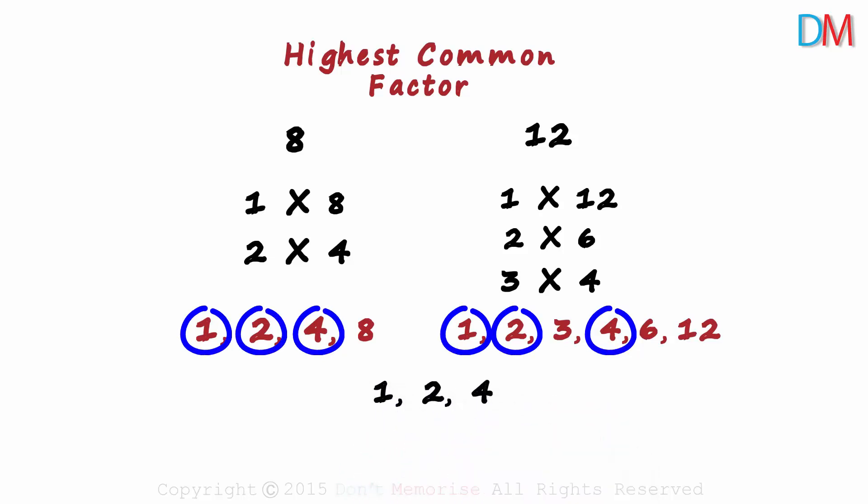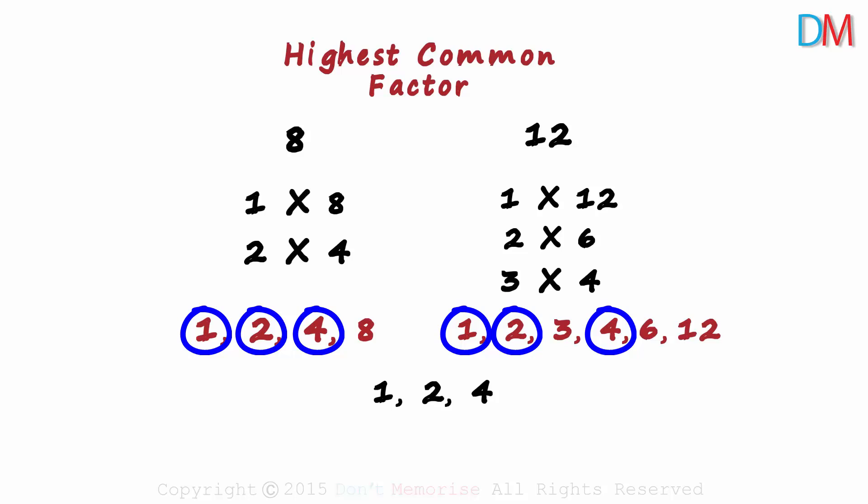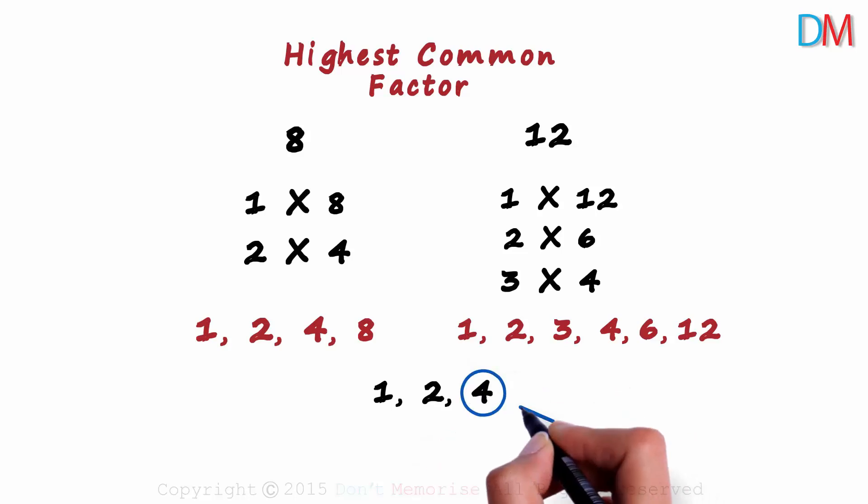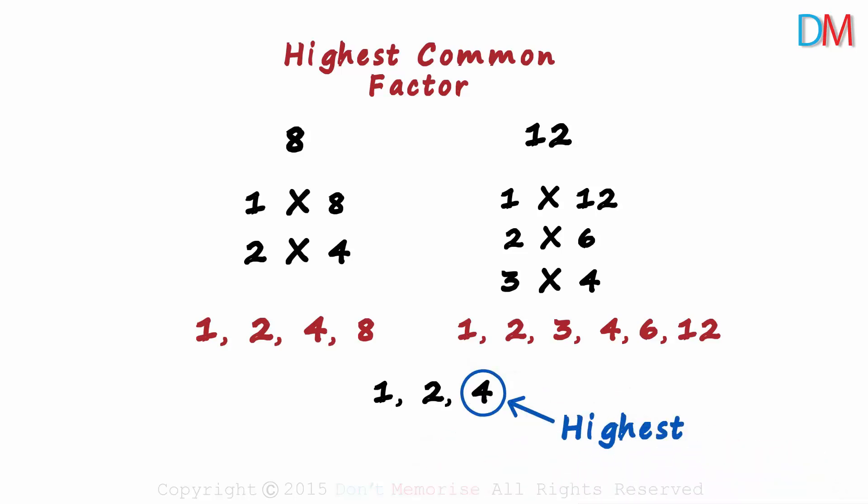1, 2, and 4 are common factors to both these numbers. And the only word that remains is highest. So we'll look for the highest common factor among all the common factors. 4 is the highest among these three numbers. Hence, the highest common factor of 8 and 12 is 4.